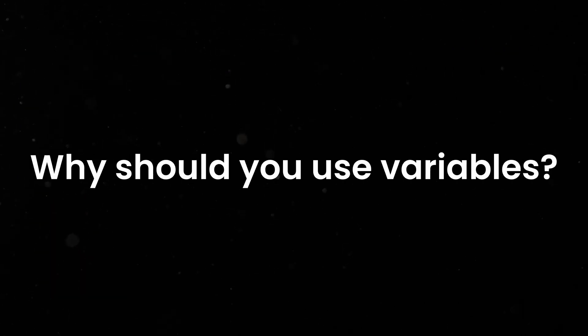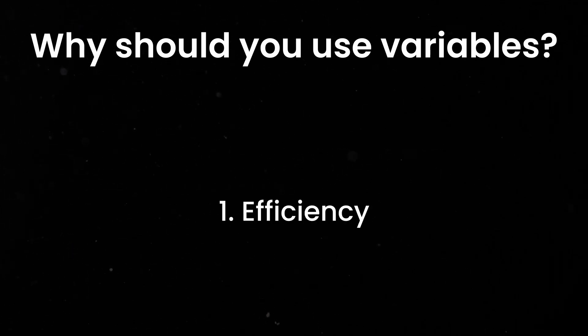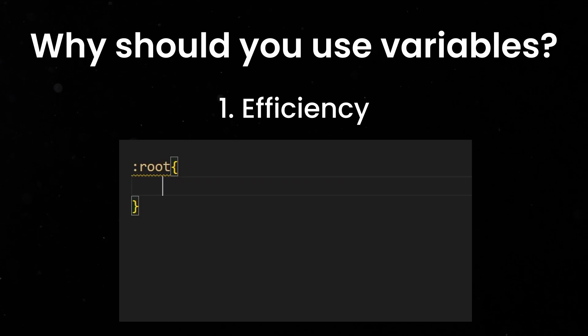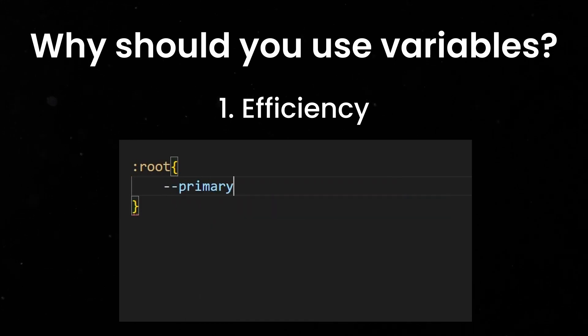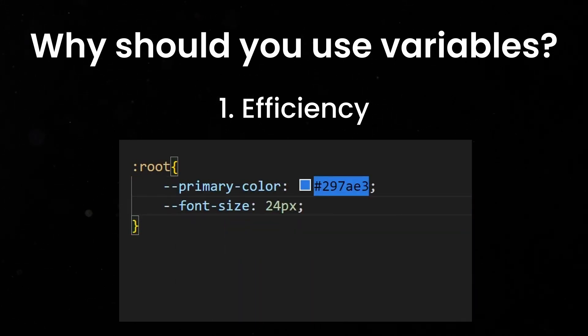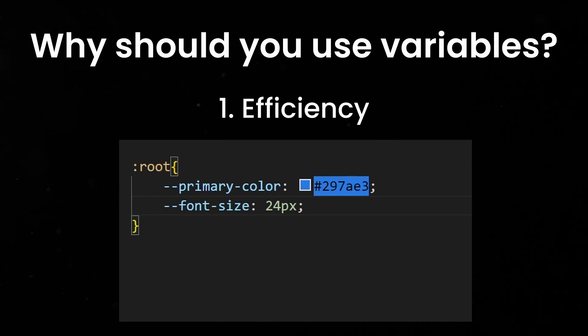But why should you use variables and how can you benefit the most from them? There are three main aspects to this. First, efficiency. By defining variables for frequently used values, such as colors or font sizes, you can save time and effort by not having to type out the same values repeatedly. This will also make your code more concise and easier to maintain.